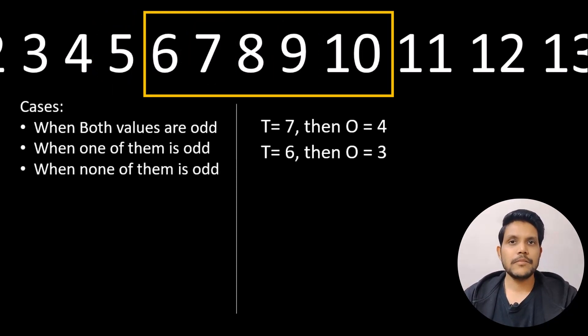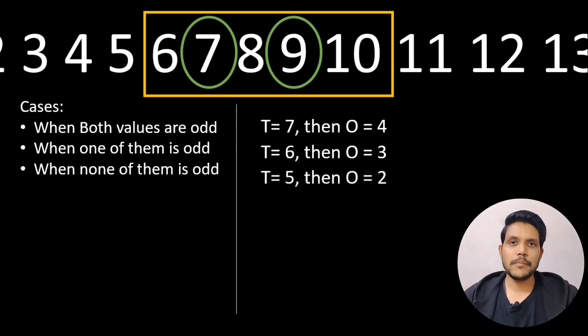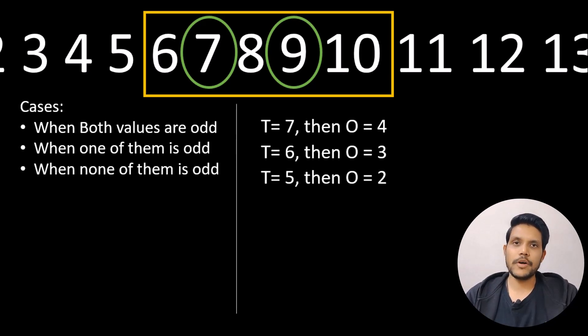The last case is where none of the two values are odd. In that case the total number of values in this range is 5 and the number of odd values is 2.